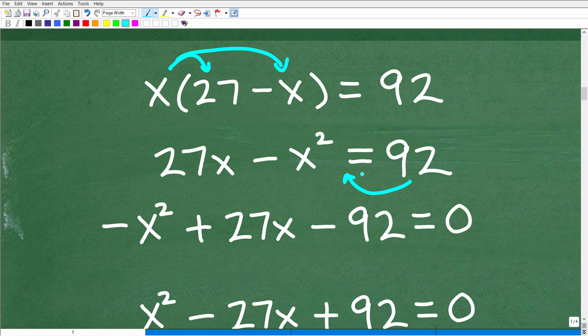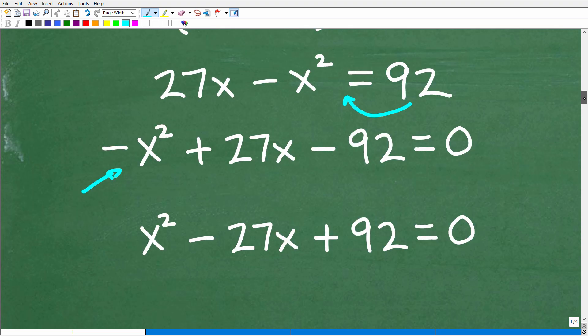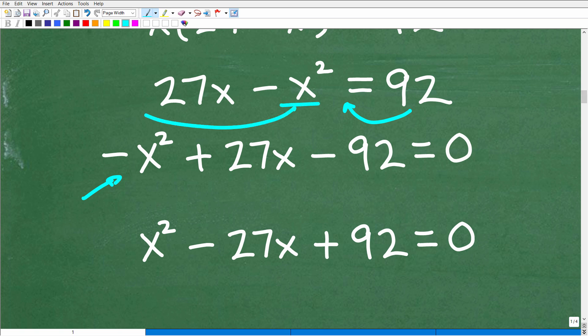So we have this equal to 92. We don't want to do that. We want to move this 92 over here and we want to put the X squared first. So we've got to shuffle these terms around so that this equation is in standard form. Okay, so I'm going to move the negative X squared in front.